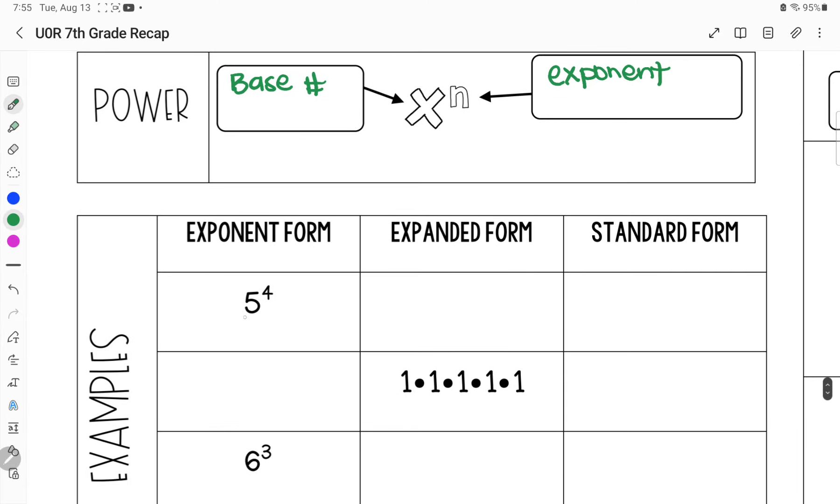Let's say they gave us, in exponent form, five to the fourth power. If we expanded that, we take our base number, which is five, and we need a total of four of them - one, two, three, four. That's expanded form. If I wanted to show it in standard form, you could put it in your calculator as five to the fourth power, or five times five times five times five. You would get 625.